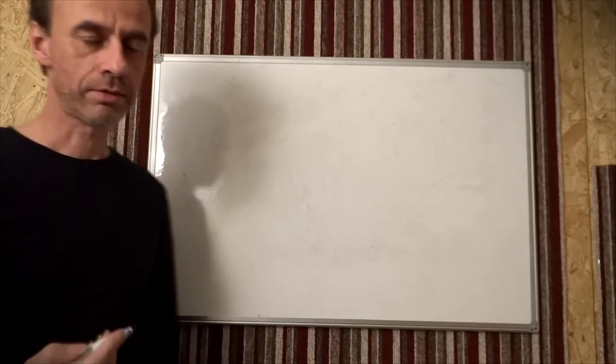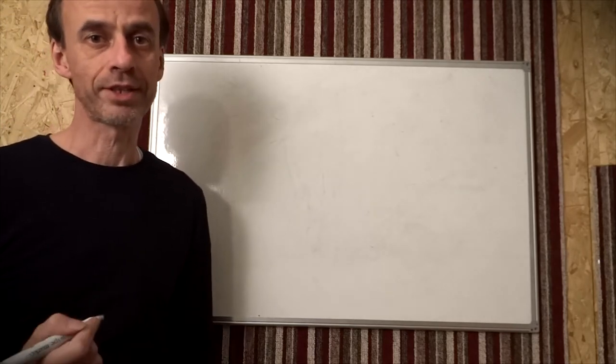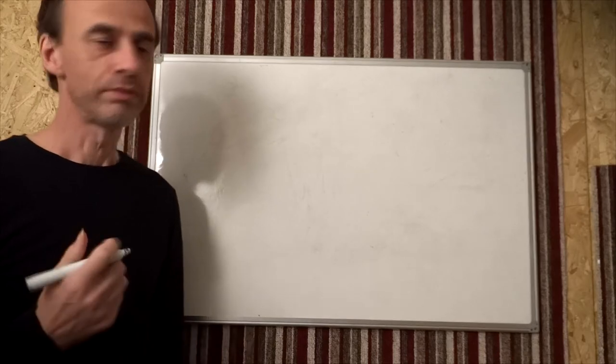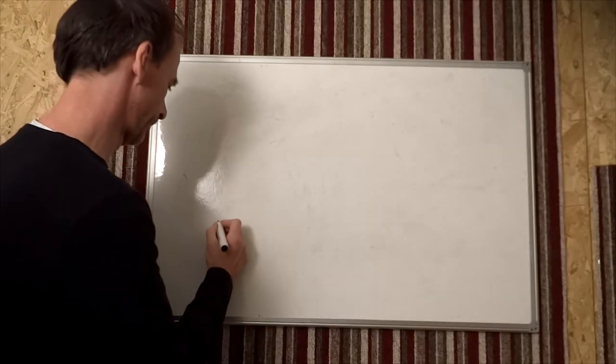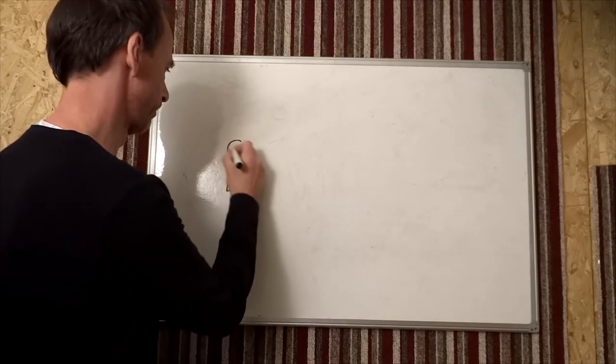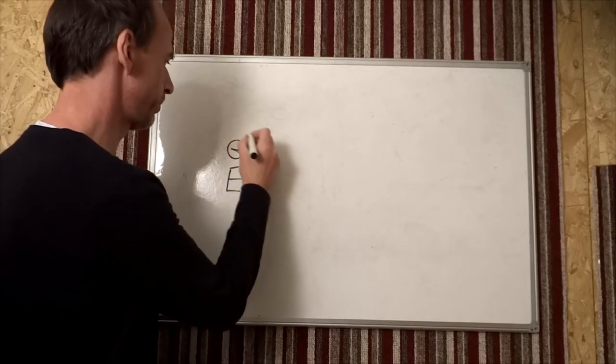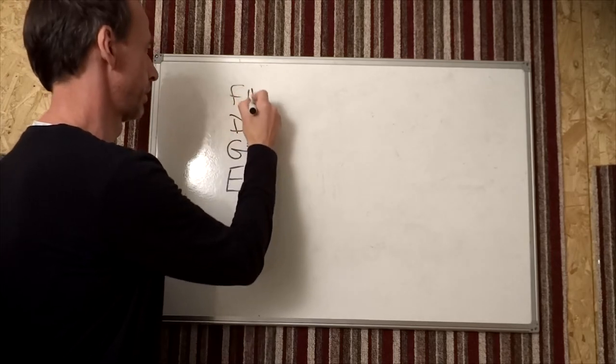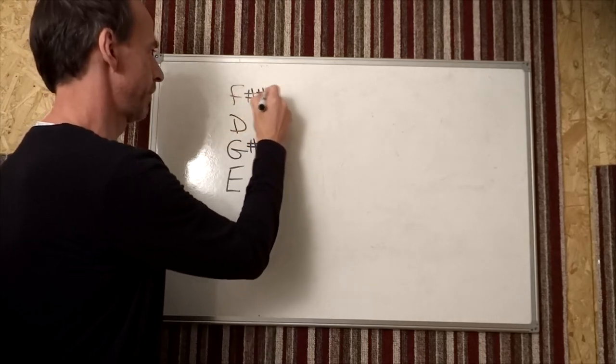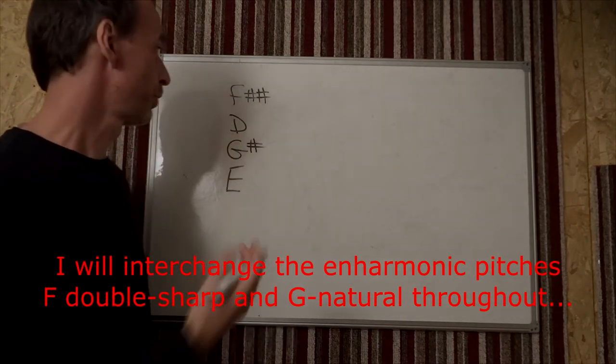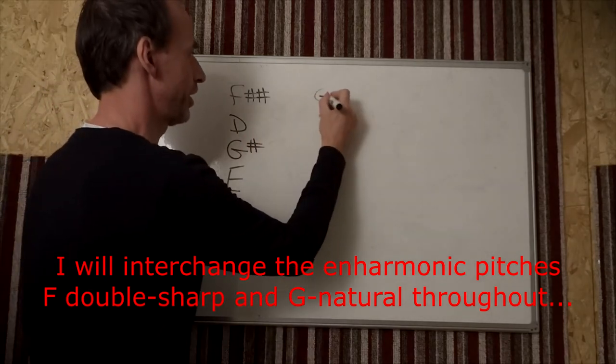This particular chord, which is known in guitar circles as the Hendrix chord, only has four notes: E, G-sharp, D, and F-double-sharp. F-double-sharp being what sounds like a G-natural.